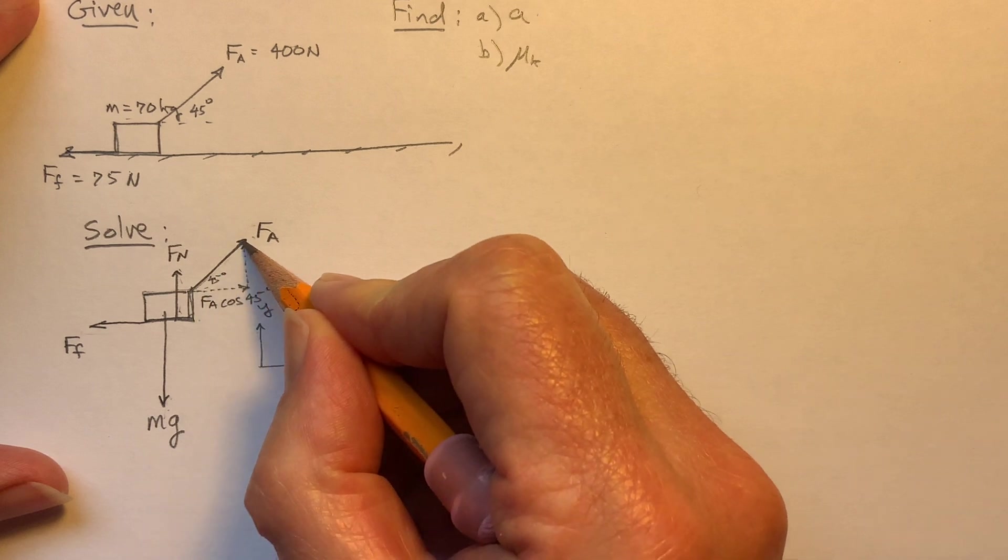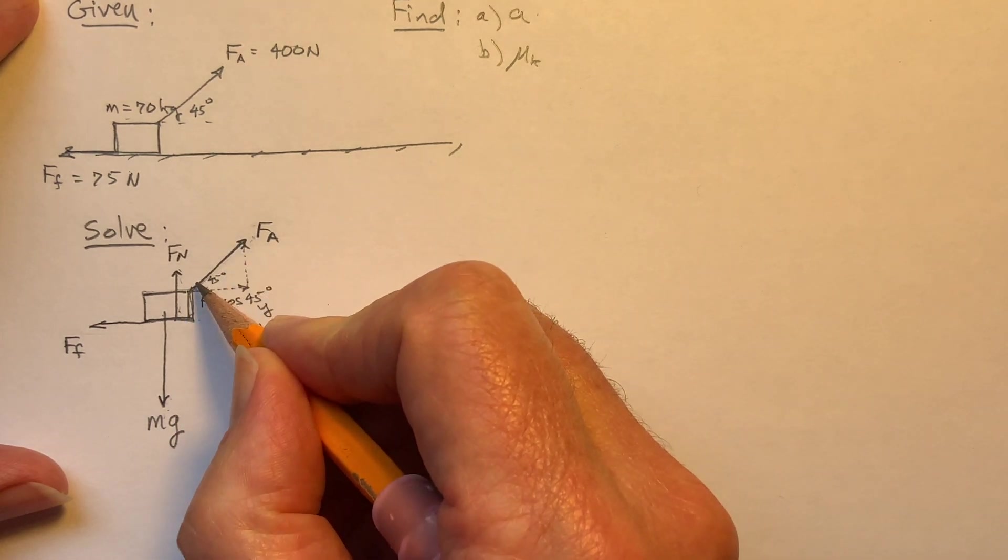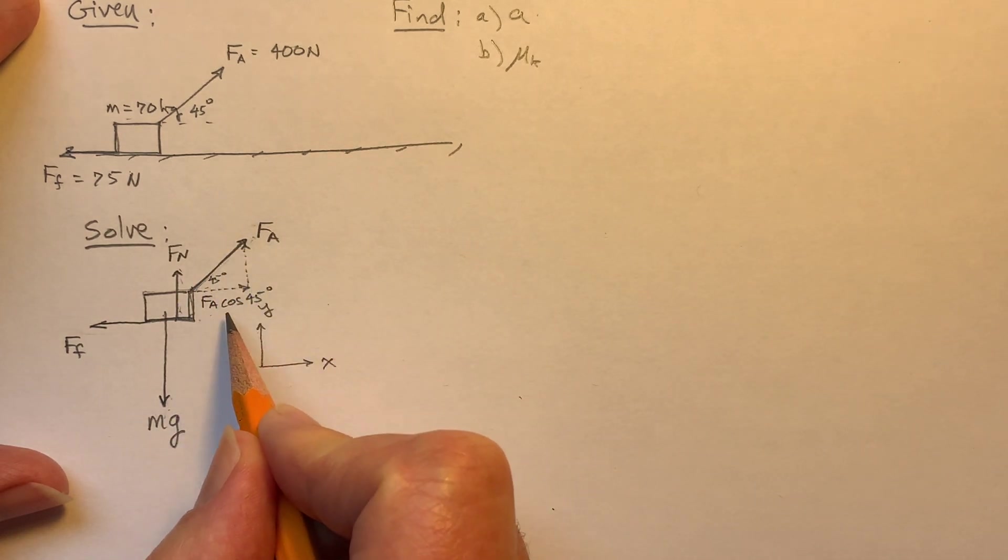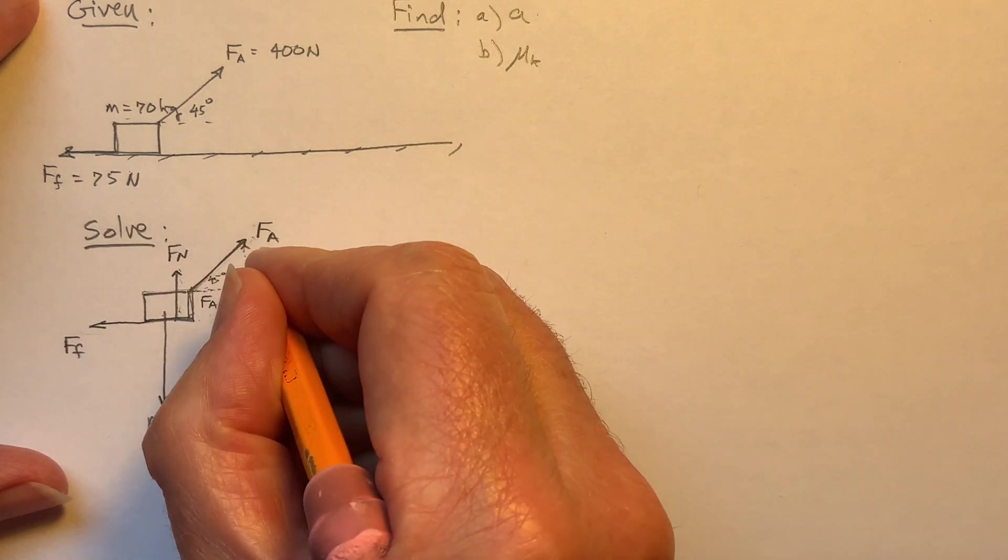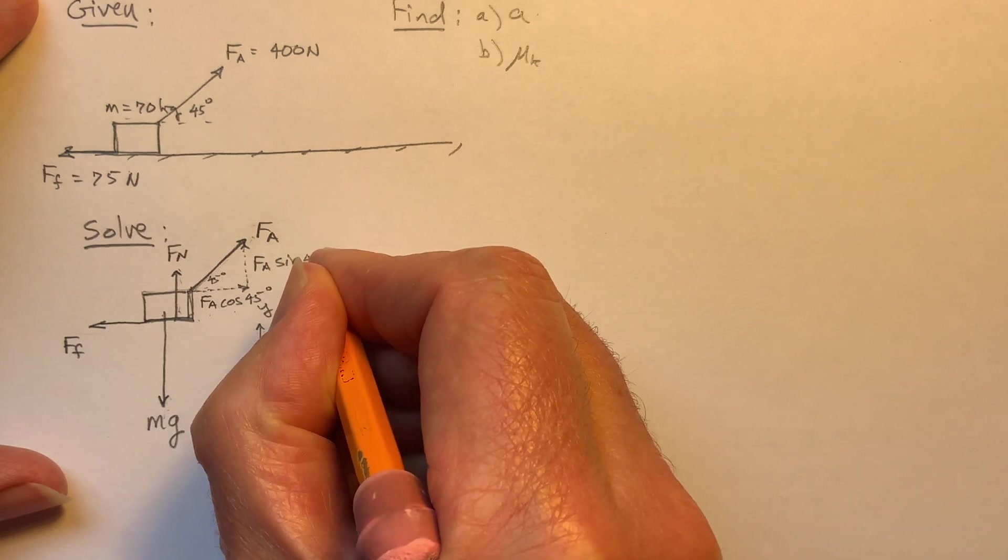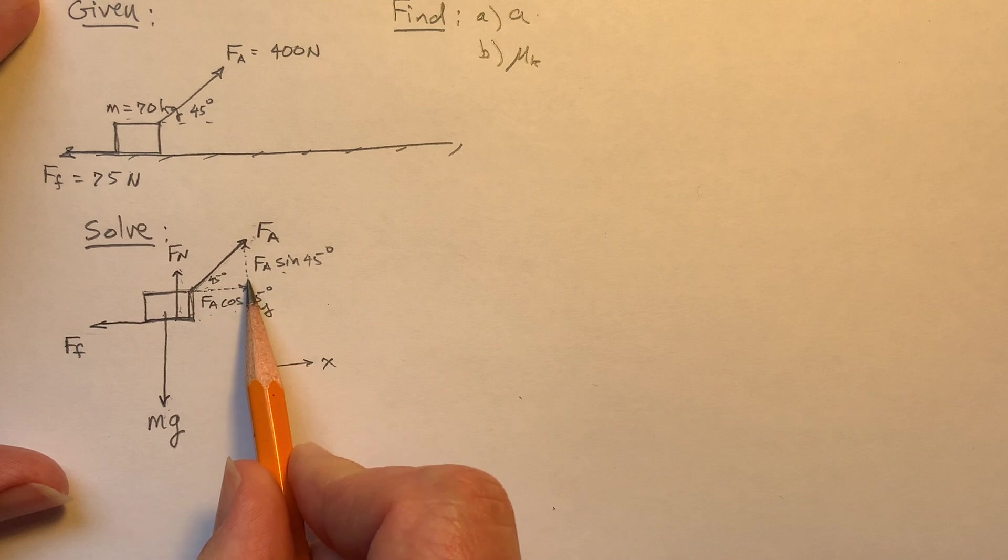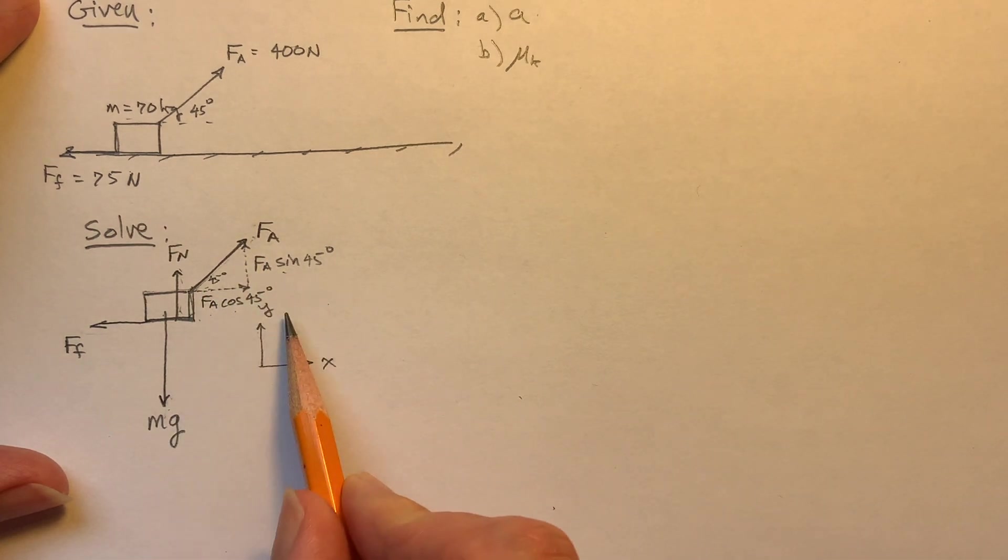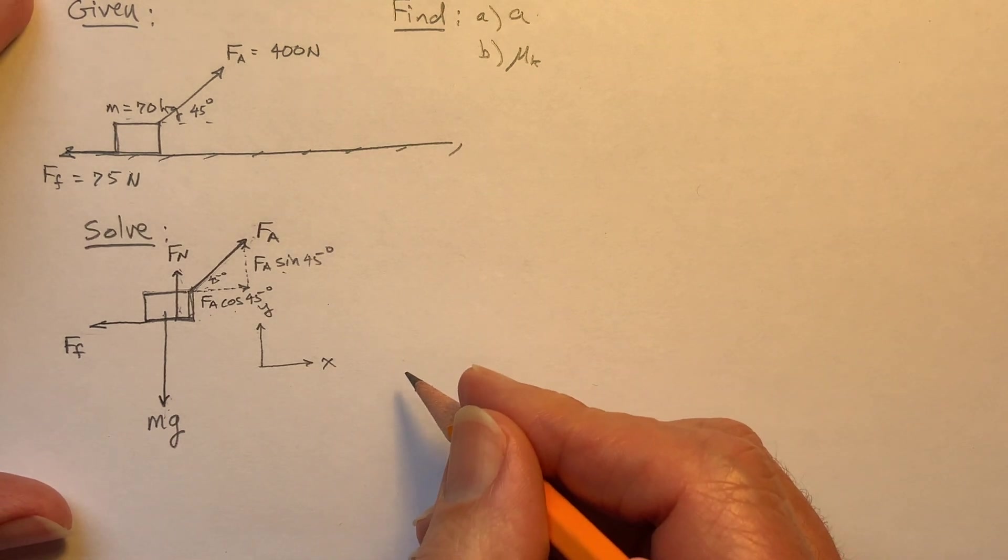And remember, the F A here, this makes a little right triangle, doesn't it? And this applied force is the hypotenuse of the right triangle. So the hypotenuse times the cosine of the angle gives us the adjacent leg. And then, of course, F A sine theta gives us the side of the right triangle that's opposite of that angle. So just a little trigonometry here, you should know.